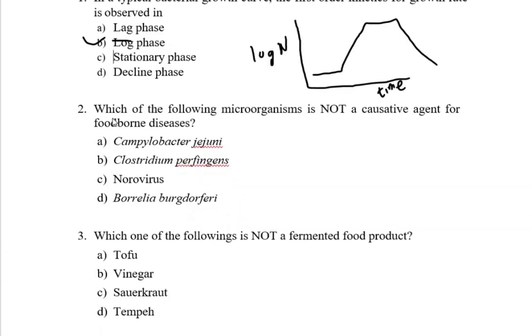Next question: which of the following microorganisms is NOT a causative agent for foodborne diseases? So first of all, what is foodborne disease? You will have to understand this one. Foodborne disease is any illness that results from the consumption of contaminated food.